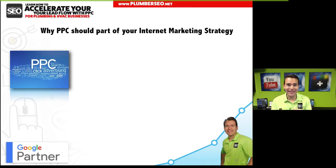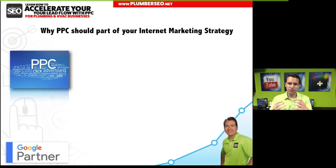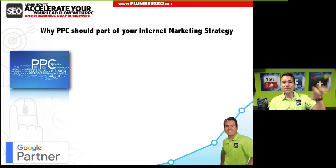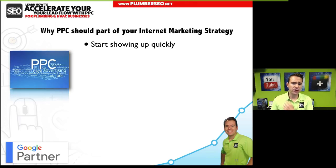Let's dive into the meat and potatoes. First, I want to lead with why PPC should be part of your internet marketing strategy. Our company name is Plumbing and HVAC SEO — Search Engine Optimization — so we lead with making sure you've got a good website built to convert and that ranks in the organic non-paid listings. So you might ask: why talk about pay-per-click? With paid search, you can start showing up quickly — within 24 to 48 hours, you can set up a campaign, bid on keywords, and start showing up in Google's top three pay-per-click listings above the fold.